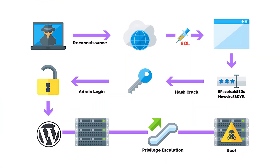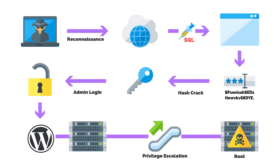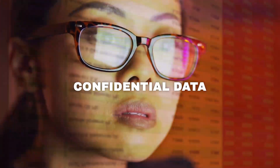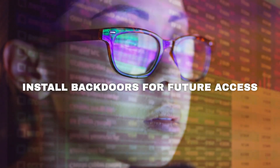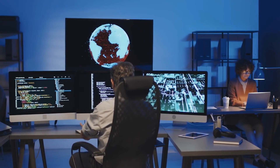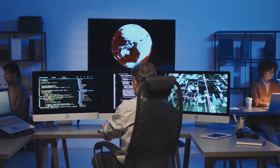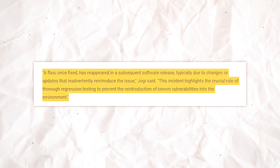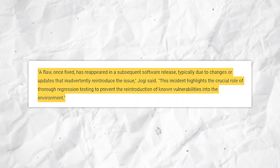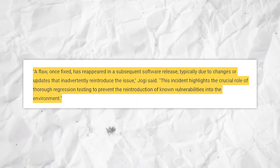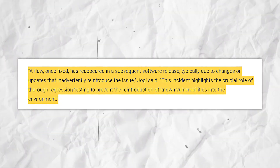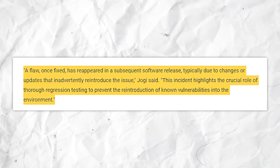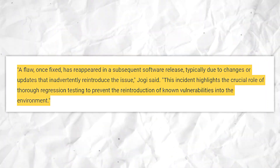Imagine a scenario where an attacker gains root access to a critical server in your organization. They could access confidential data, modify system configurations, install backdoors for future access, and use the compromised system as a launchpad to attack other systems in your network. As Bharat Jogi from Qualys put it: 'A flaw once fixed has reappeared in a subsequent software release, typically due to changes or updates that inadvertently reintroduce the issue,' highlighting the importance of thorough regression testing.